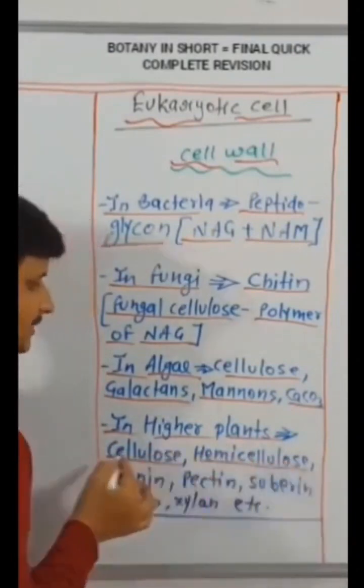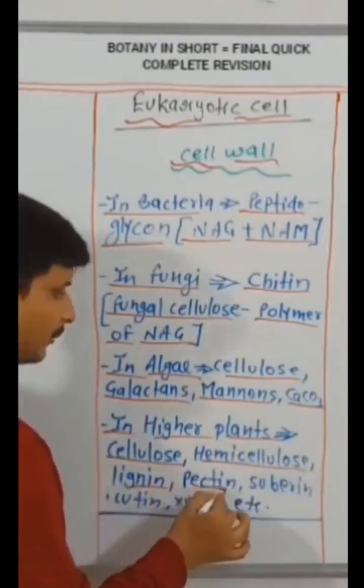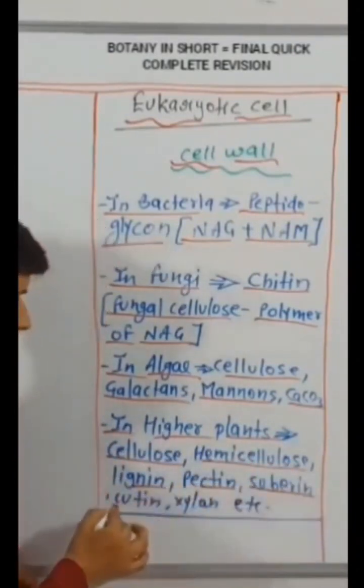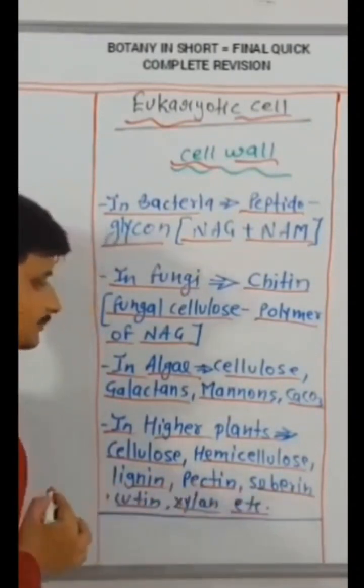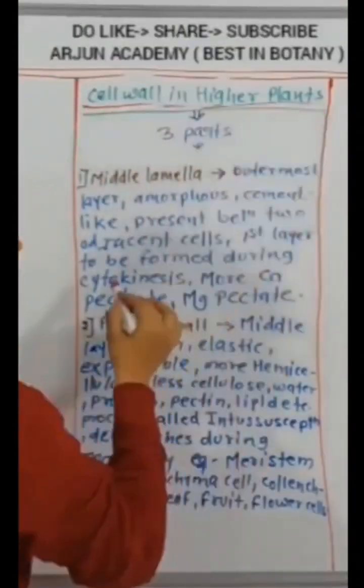In higher plants: cellulose, hemicellulose, lignin, pectin, suberine, cutin, xylan, etc. Cell wall in higher plants has three parts.